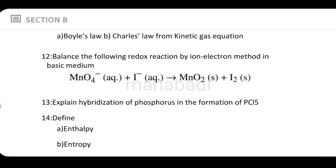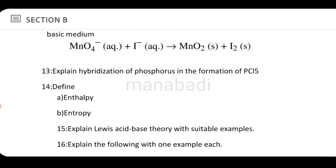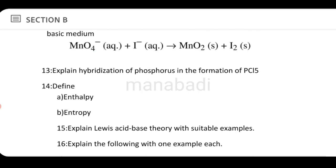Next: balance the following redox reaction by the ion-electron method in basic media. So use the ion-electron method in basic media. Next: explain the hybridization of phosphorus in the formation of PCl₅. Phosphorus undergoes sp³d hybridization in PCl₅.